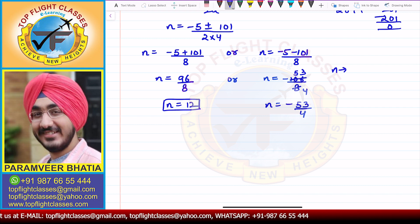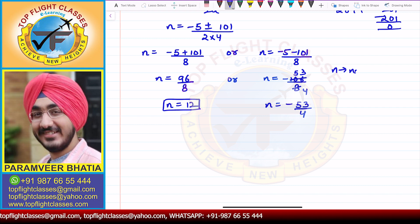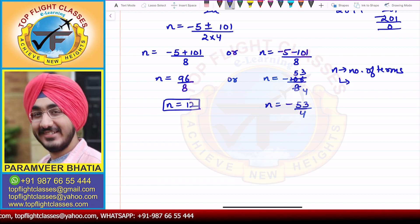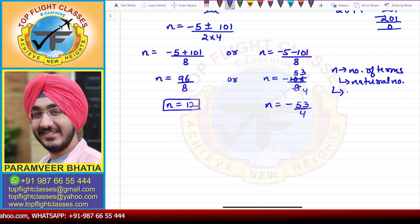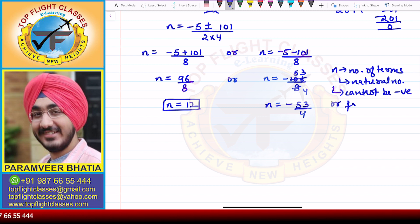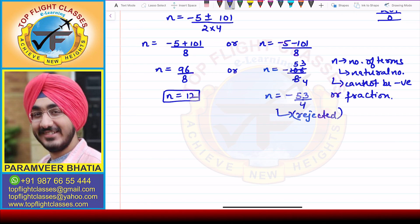Since N is the number of terms, it is always a natural number and cannot be negative or a fraction. Therefore, the value minus 53/4 is rejected, and N equals 12, which is the answer to the question.